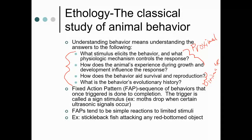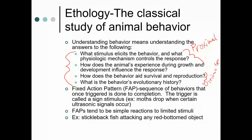Ethologists focus on what's called a fixed action pattern — a sequence of behaviors that an organism performs exactly in that sequence, and it must be completed once started. The trigger is called a sign stimulus. An example is moths flying around at night near a light. If you shake your keys, they produce ultrasonic frequencies, and you can see the moths performing their fixed action pattern — they flit for a second, raise an arm, and that arm raise causes them to spiral downward in a dive.